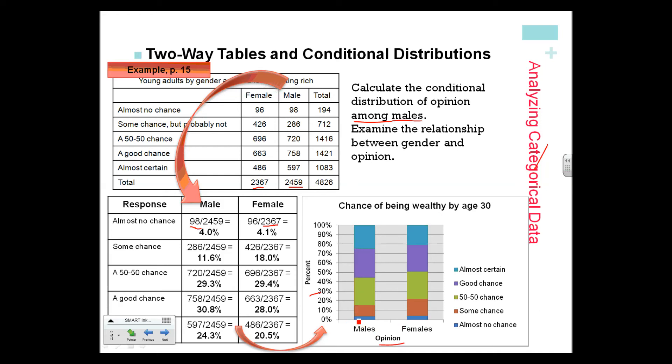This blue here corresponds to almost no chance, so that's our 4%. We just make this bar—we color it up to 4%. Since we need 11.6% for some chance, we add 4% to 11.6%, and that tells us how much to make red, green, purple, and so forth, until we have it all add up to 100%.